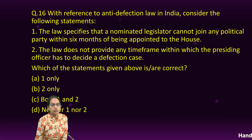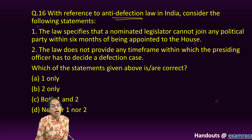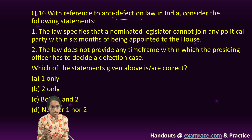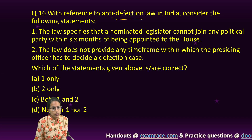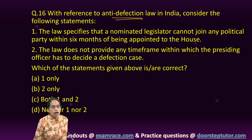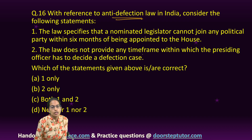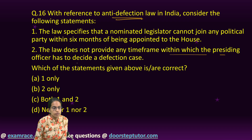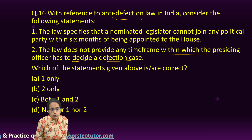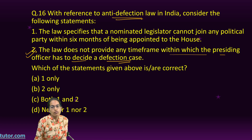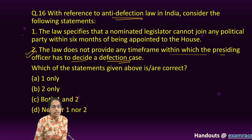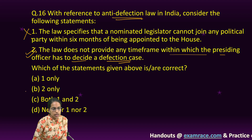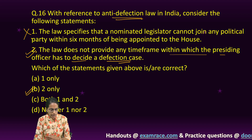Starting with the next 15 questions for the GS Paper 1. The first question talks about anti-defection law — a similar question was asked in previous years, so anti-defection is a very important topic. This law does not provide any time frame within which the presiding officer has to decide the case of defection — that is the correct statement. However, the nominated legislator can join within six months, so statement one is incorrect. Two only is the right option here.